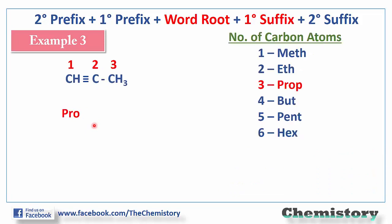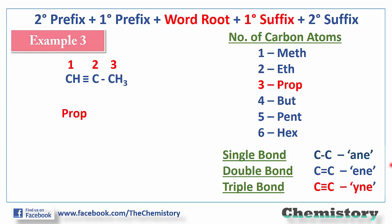Example number three: a chain of three carbons is given. According to the word root table, for a three-carbon chain the word root is 'prop'. A carbon-carbon triple bond is visible, so the primary suffix will be 'yne'. The compound's name will be 'propyne'. I hope it's clear to you all.